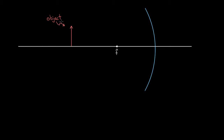Imagine you've got an object sitting in front of this concave mirror. If you wanted to figure out where the image is formed, you can draw ray tracings. One ray you can draw is a parallel ray that goes through the focal point.